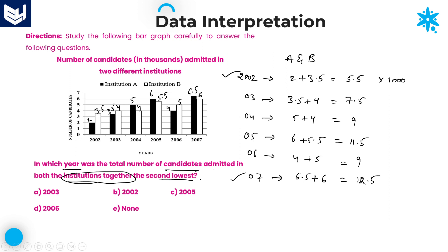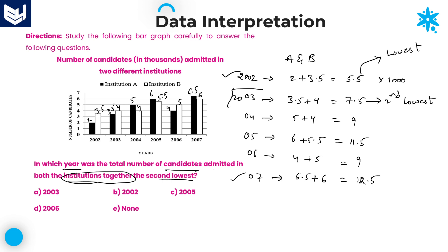Now, the question asks for the second lowest. The lowest combined value is 5.5, which occurred in 2002. After that, the next value is 7.5 — and there is no other value less than 7.5, so that is the second lowest. This happened in the year 2003. So 2003 is the second lowest, and Option A is the right answer.